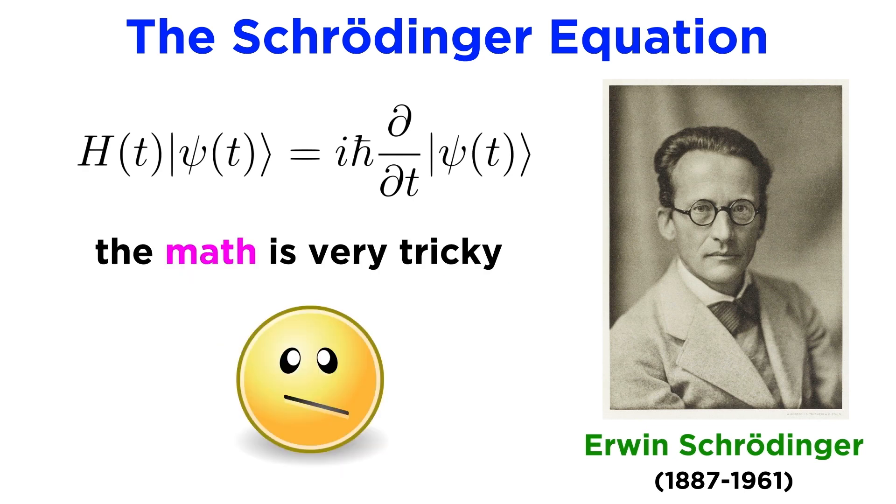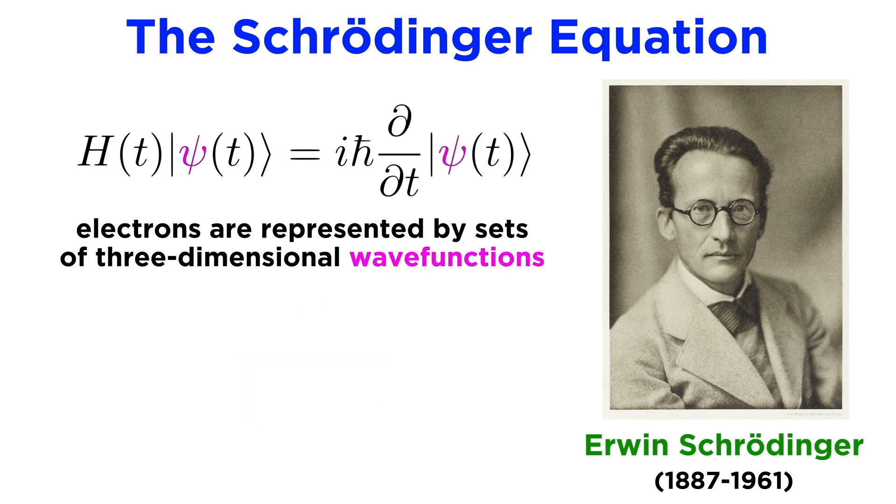Of course, we won't get into any of the math here, it's just way too complicated and not relevant to the introductory chemistry principles we are investigating. But generally speaking, Schrödinger visualized electrons as three-dimensional wave functions, represented by the Greek letter psi.